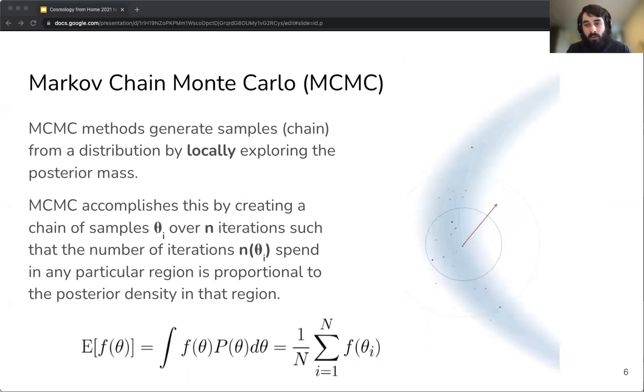Now one important thing to remember from this is that MCMC methods are based on the local exploration of the posterior mass, the probability mass, and thus its performance is affected by the local characteristics of the distribution like the local structure of the distribution. For example in this GIF on the right you can see the distribution looks like a banana so it has a very curved local structure. As we will see this will affect the sampling performance of MCMC in this example.